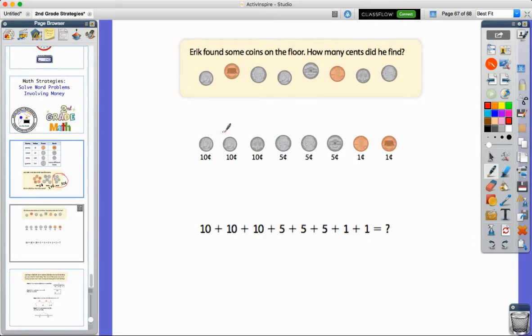We can skip count: 10, 20, 30, so we had 30 cents in dimes. We had five, ten, fifteen cents in nickels.